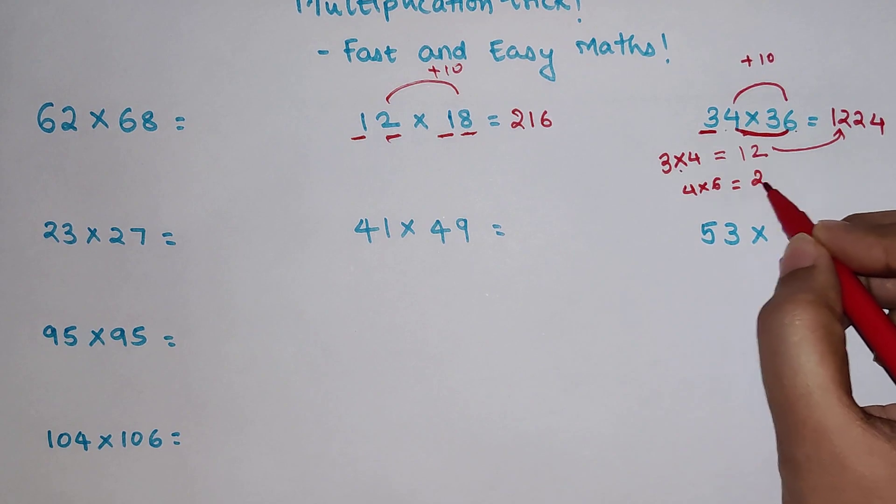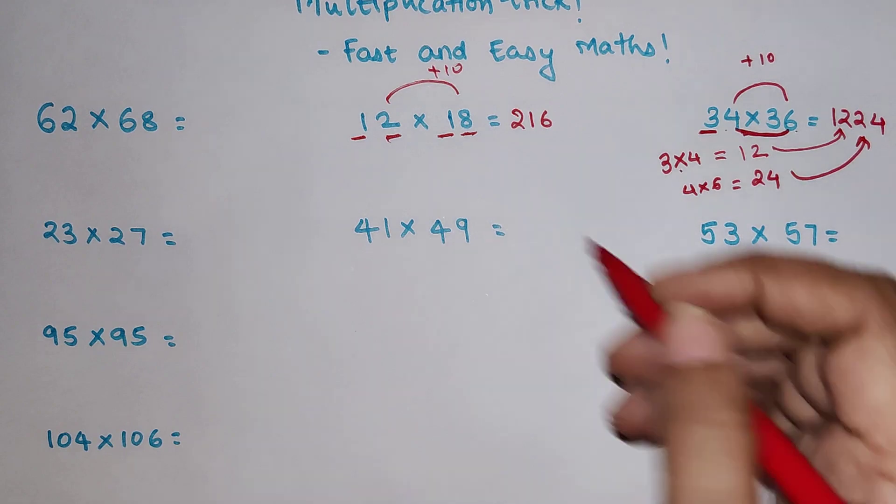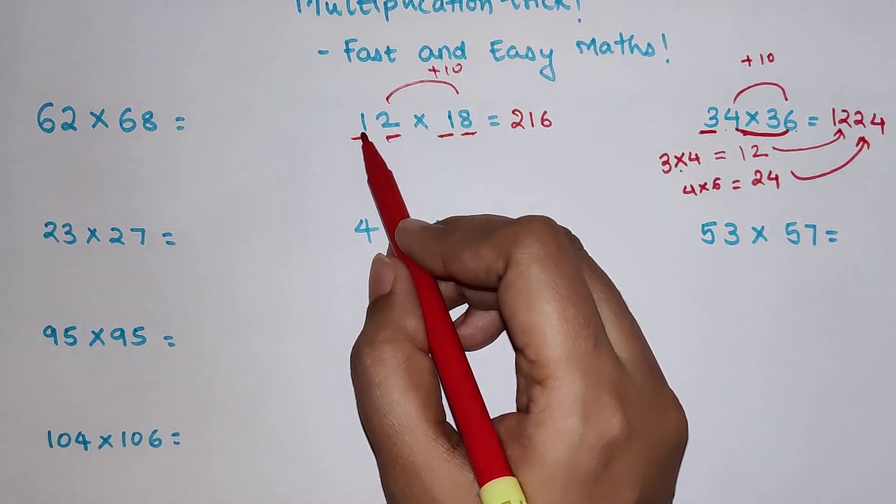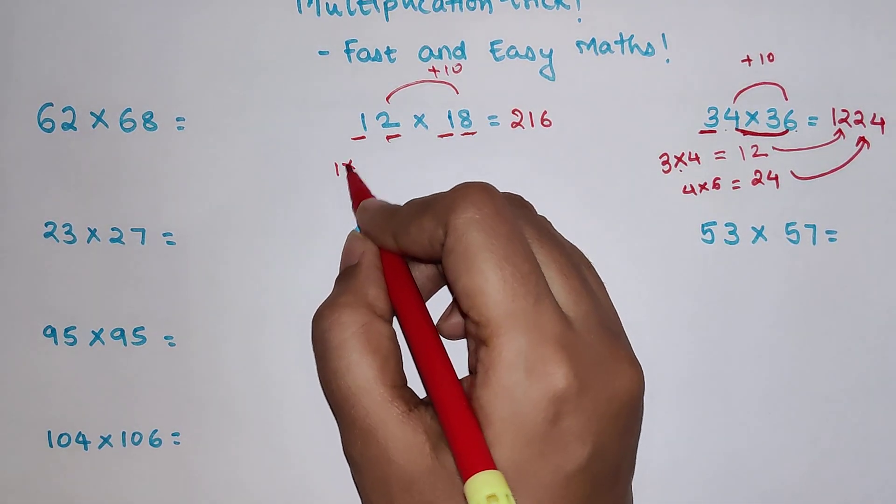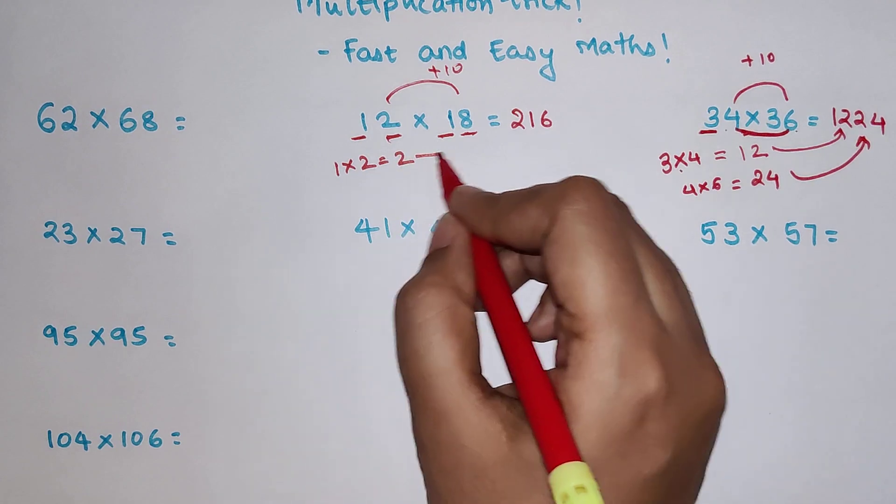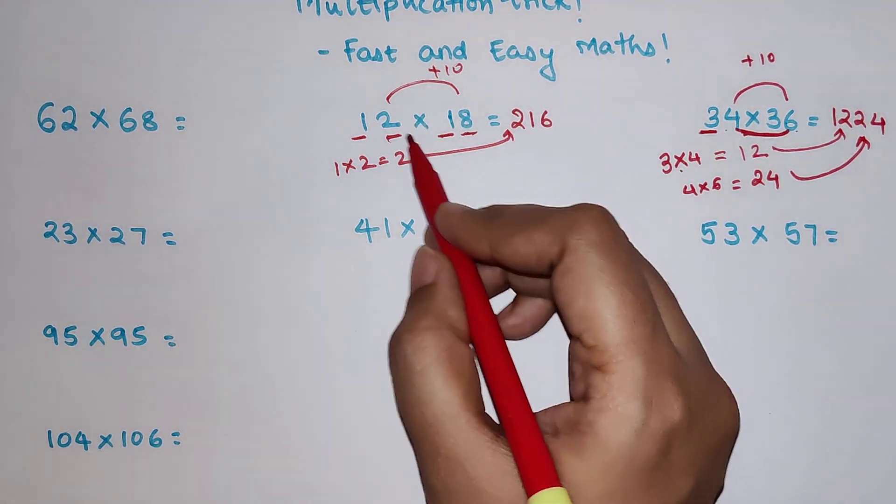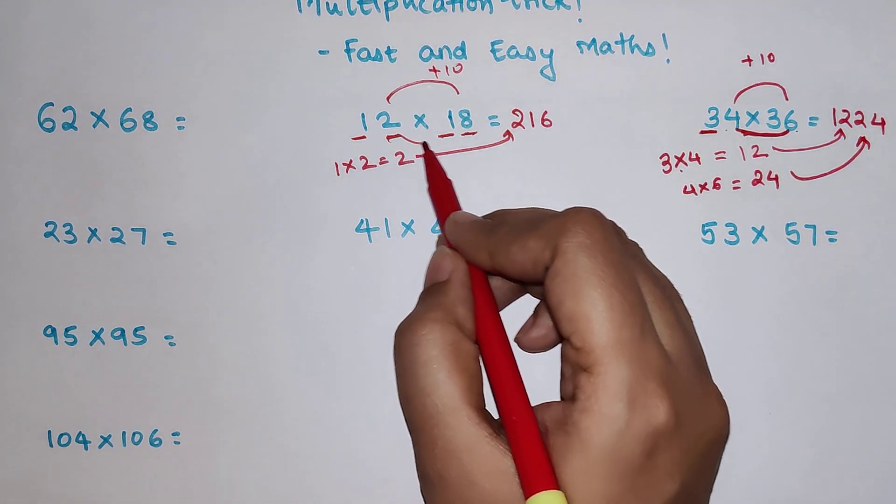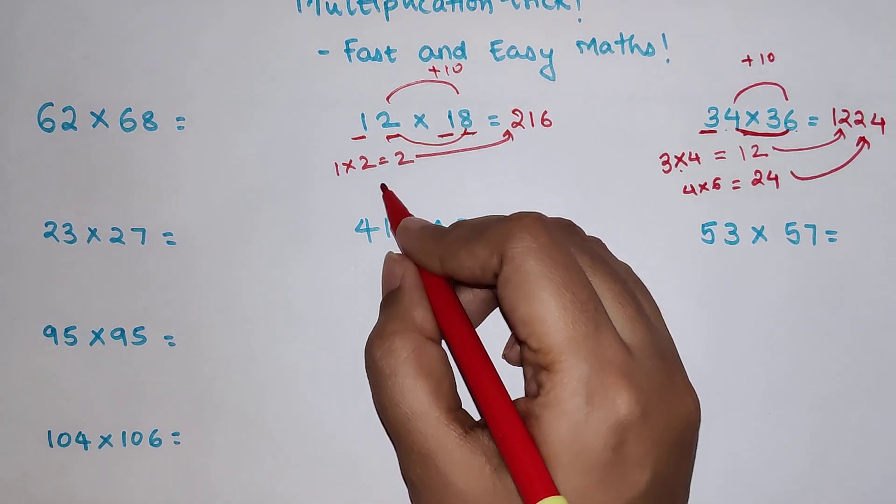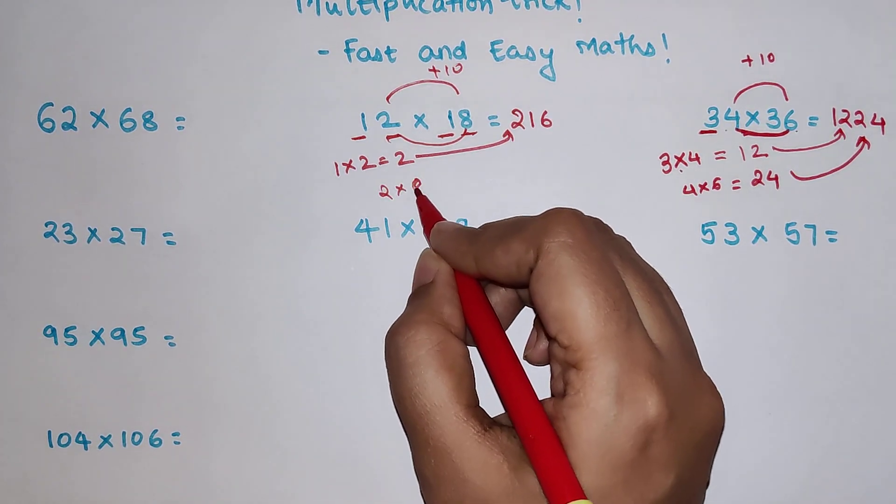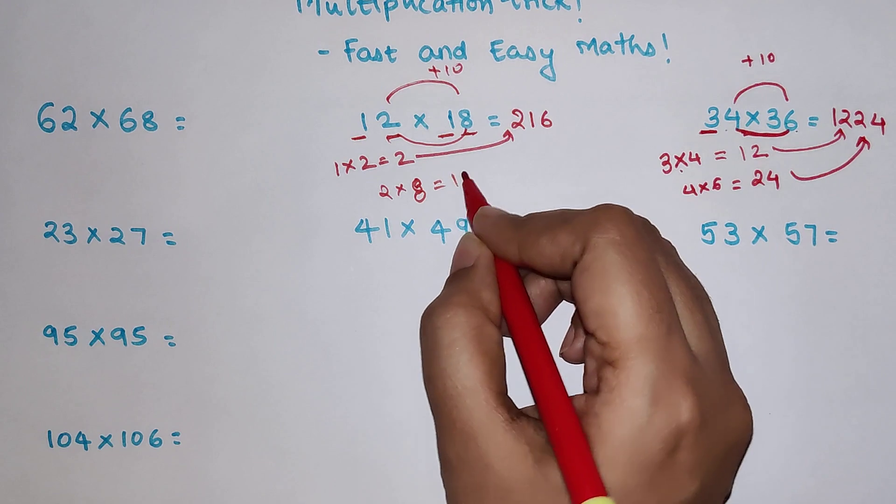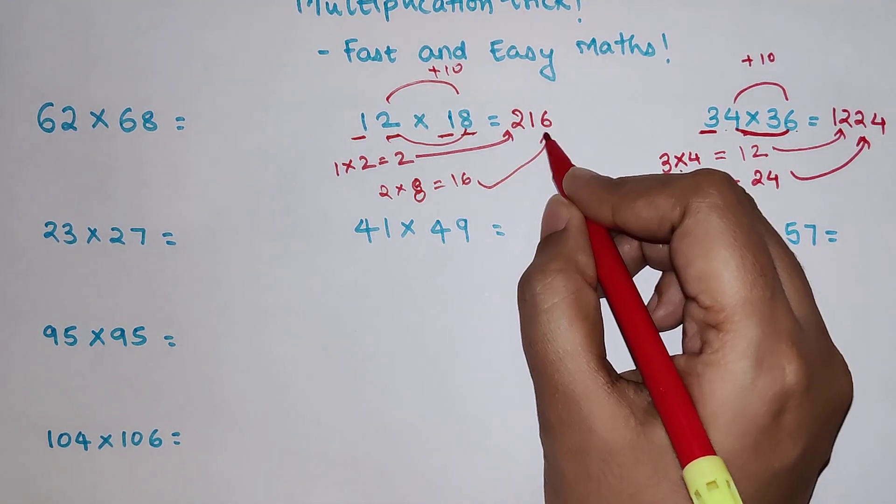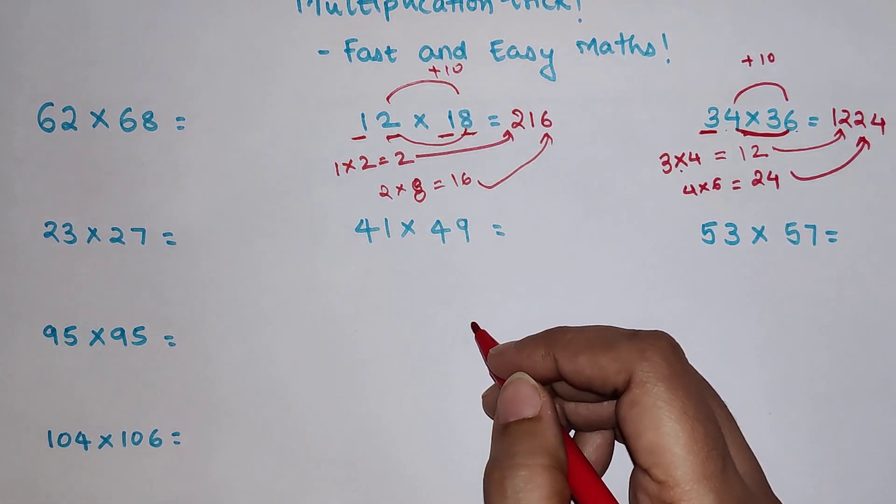So 4 into 6 gets you 24 and that forms the second part of your answer. Similarly over here what comes after 1 is 2. So 1 into 2 gets you 2, that is the first part of your answer. And next is what, you multiply 2 and 8. 2 into 8 gets you 16. So 16 is the last part of your answer.